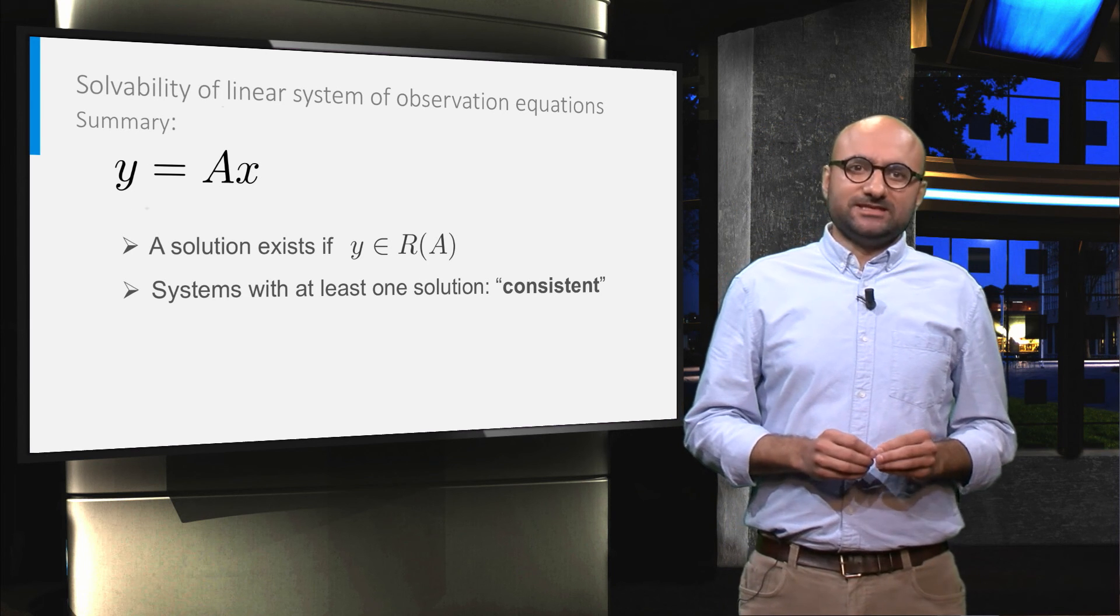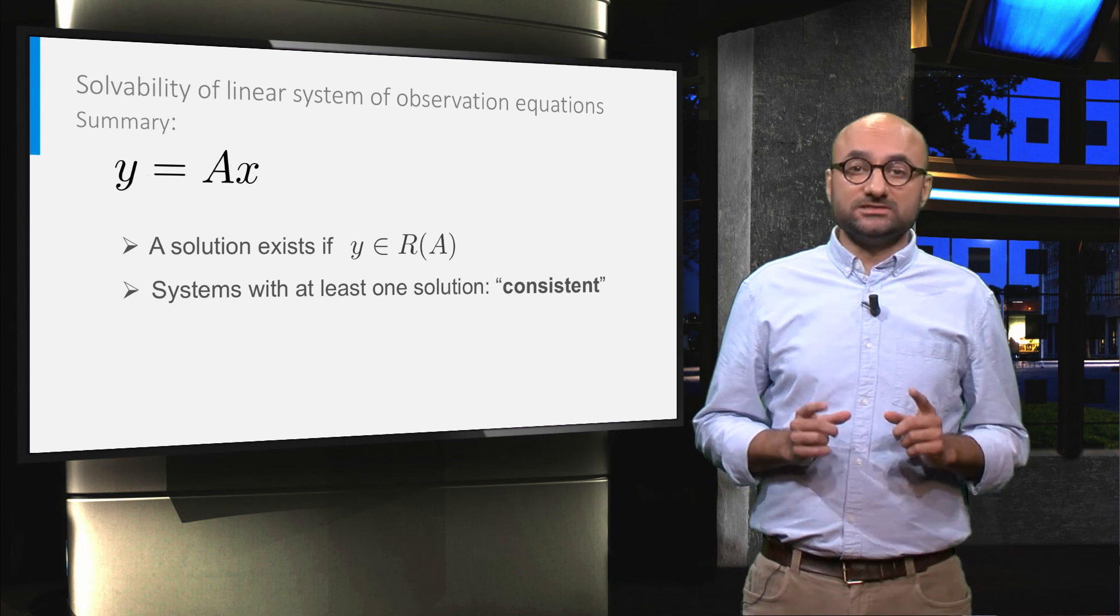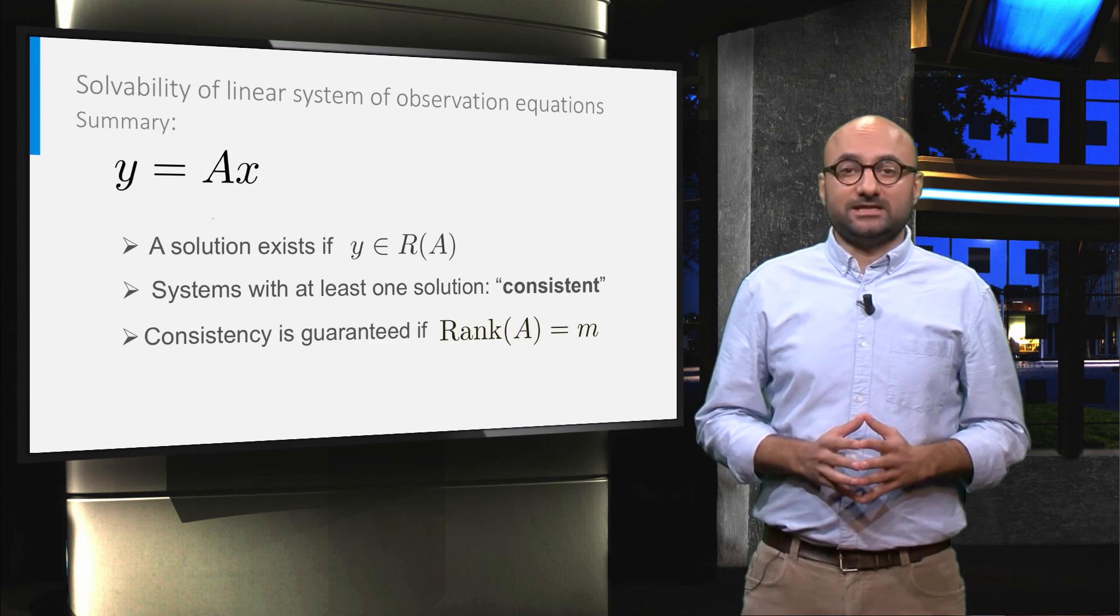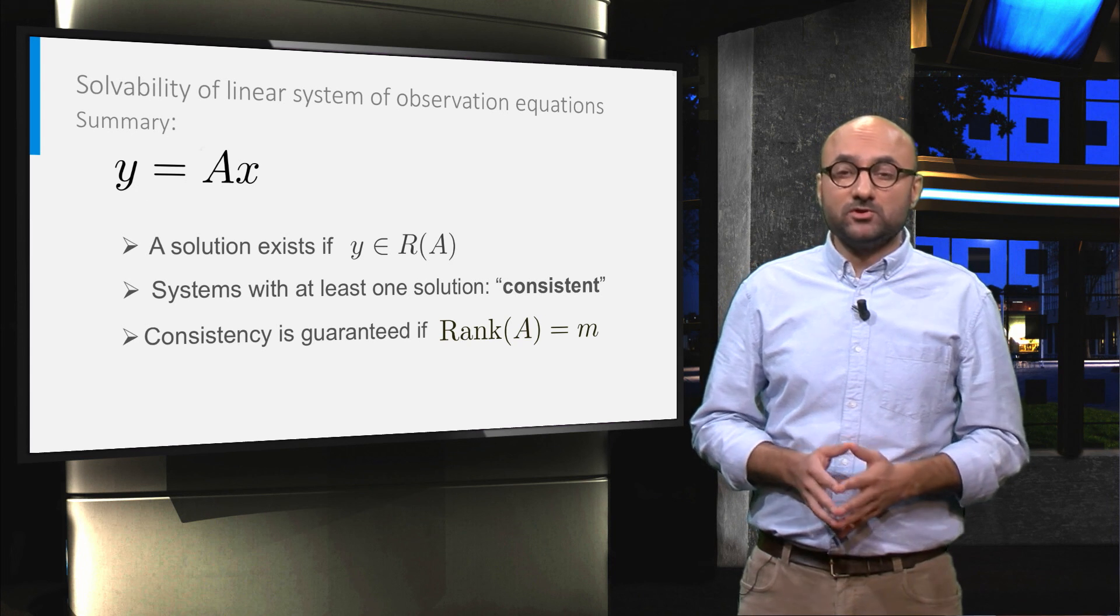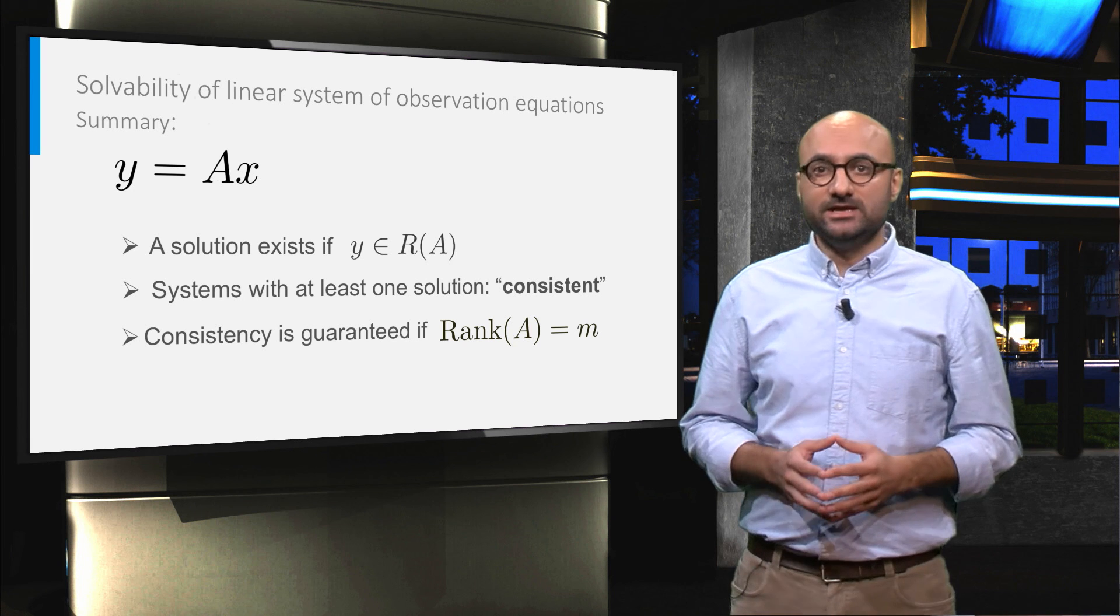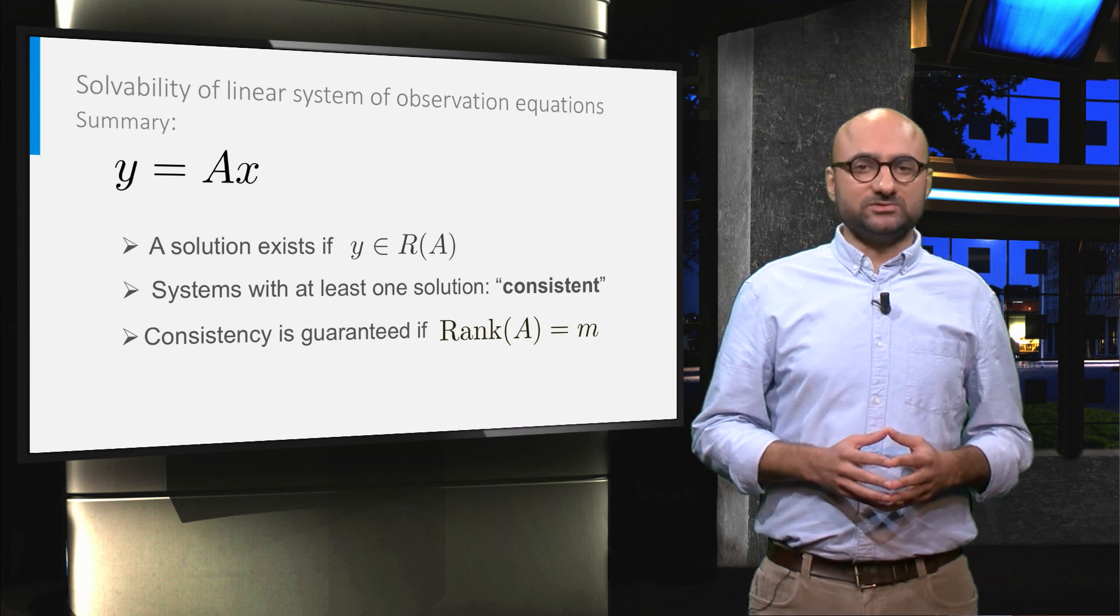Systems with at least one solution are called consistent systems, and consistency is guaranteed if the rank of A, or number of independent columns of A, is equal to the number of observations.